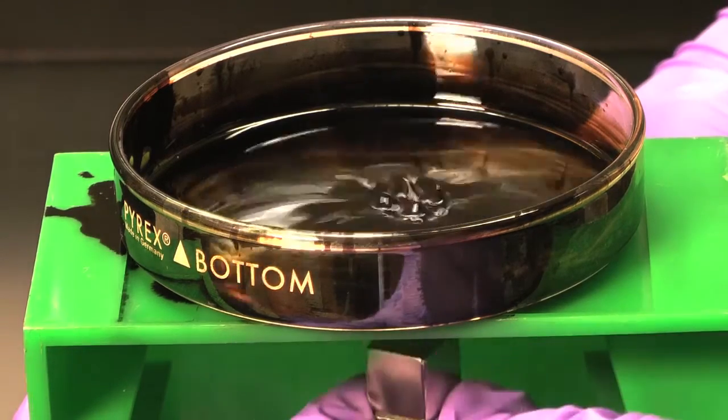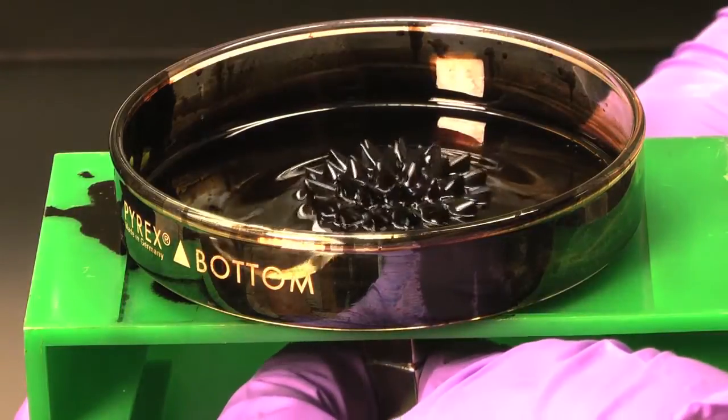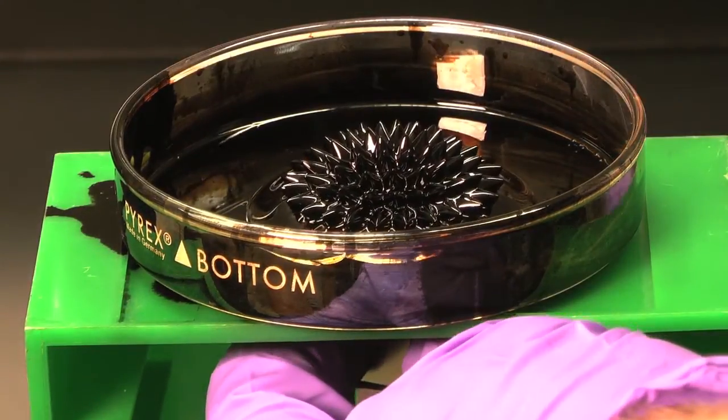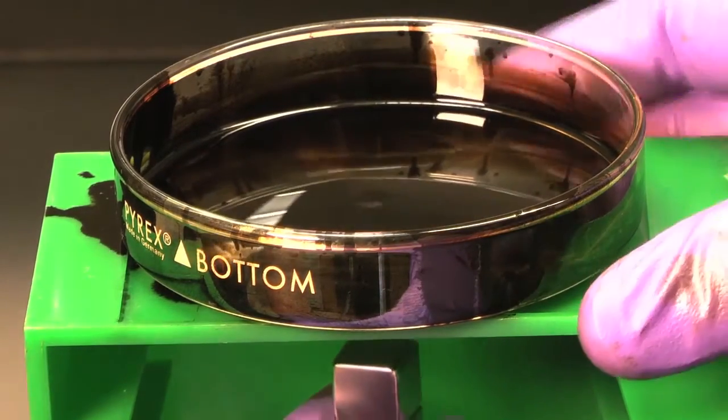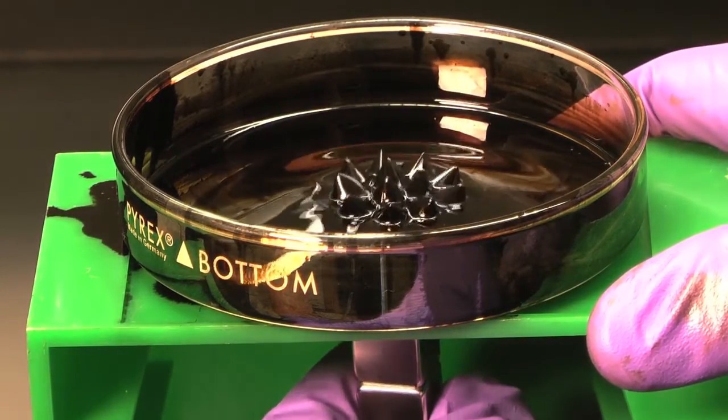If we weaken the magnetic field, the number of spikes decreases and they are further apart. The magnetic field lines are less densely concentrated.